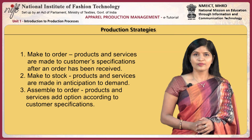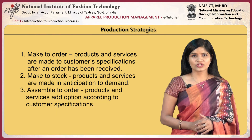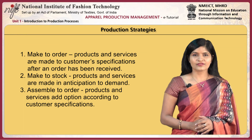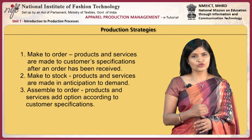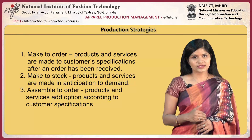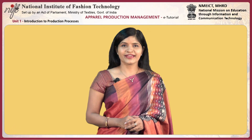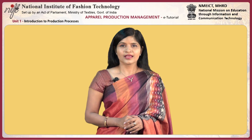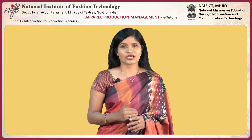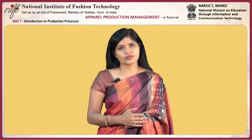Production strategies: Make to Order — products and services are made to customer specification after an order has been received. Make to Stock — products and services are made in anticipation of demand. Assemble to Order — products and services are assembled to customer specifications. In this unit, you have reviewed apparel market analysis, basic production processes and strategies, and apparel production planning and control.